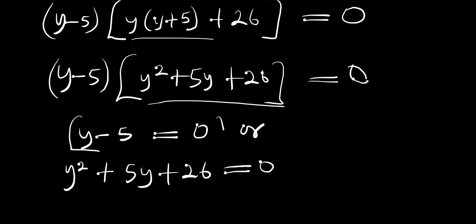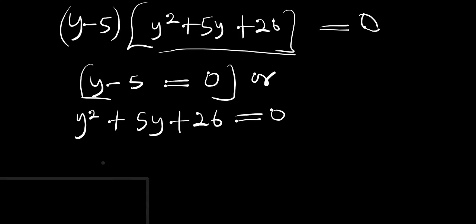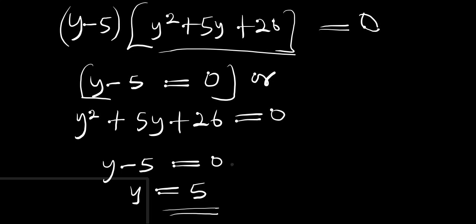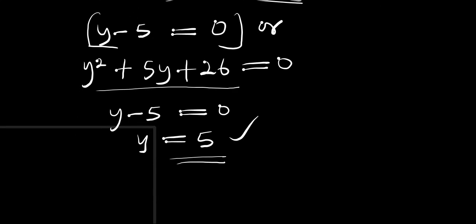Now let's start with the first equation. If y - 5 = 0, that means y = 5. For the second equation, we are going to check whether we have real roots or complex roots, so we make use of the discriminant: discriminant equals b² - 4ac.